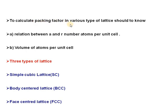When calculating the packing factor, we must know the relation between 'a' (the lattice edge length) and 'r' (the atomic radius), as well as the number of atoms per unit cell and the volume of atoms per unit cell. We will calculate the atomic packing factors for three lattice types: first, simple cubic lattice; second, body-centered cubic lattice; and third, face-centered cubic lattice.